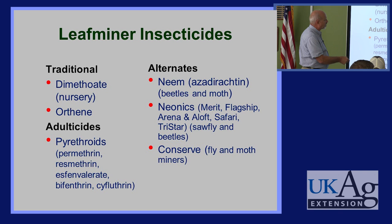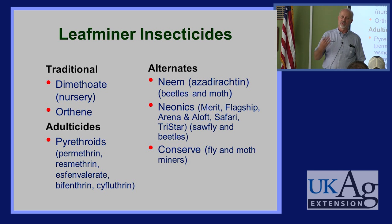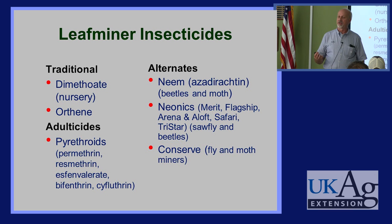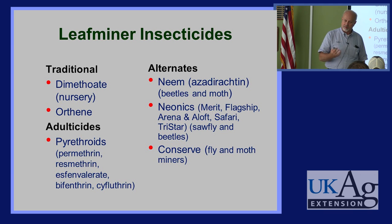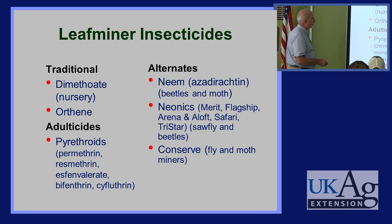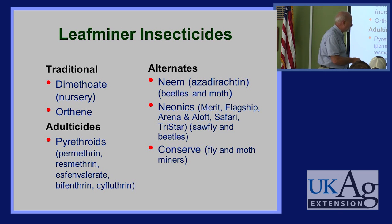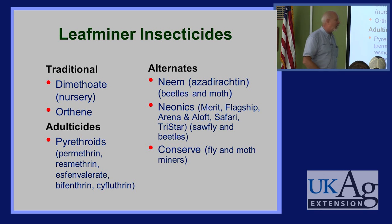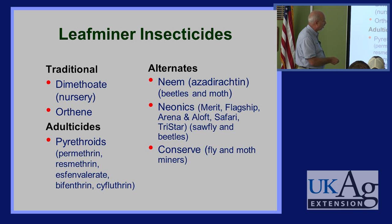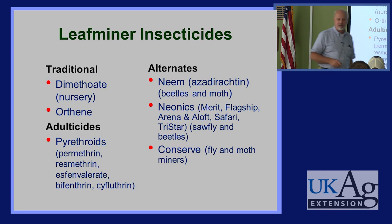Imidacloprid/Merit, Thiamethoxam/Flagship, and Arena/Aloft containing clothianidin are highly toxic to pollinators, especially bees. I would not use those on plants prior to flowering. On the other hand, Dinotefuran in Safari and Acetamiprid in Tristar have very low toxicity ratings for honeybees — still systemic, but much safer. If you've got to use something during flowering phase, I would seriously consider Tristar or Acetamiprid, though a bit more expensive.